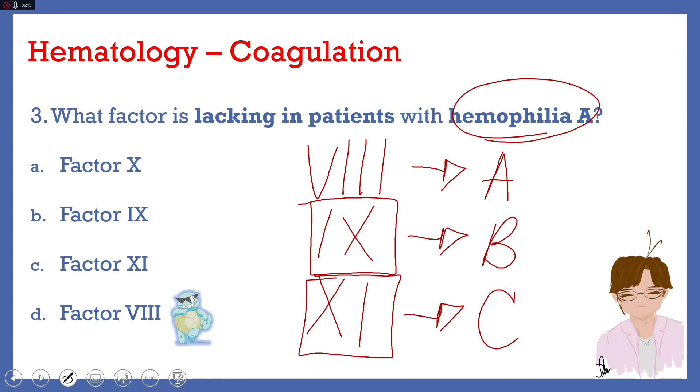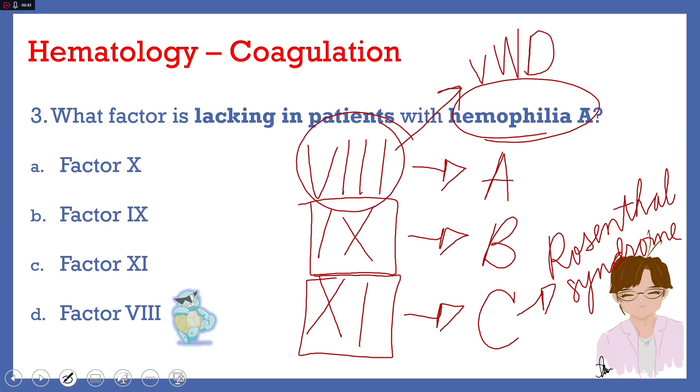Factor 11, hemophilia C, is also known as Rosenfall syndrome. Factor 8 will be hemophilia A, but another disease of this factor will be von Willebrand's disease. Hemophilia A is an X-linked recessive form of factor 8 defect, while von Willebrand's disease is an autosomal dominant defect for factor 8. So number 3 answer is letter D, factor 8.